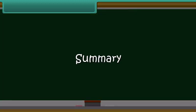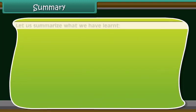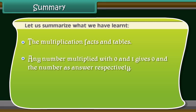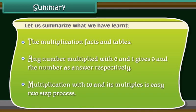Summary: Let us summarize what we have learned. The multiplication facts and tables. Any number multiplied with 0 and 1 gives 0 and the number as answer respectively. Multiplication with 10 and its multiples is easy two-step process.